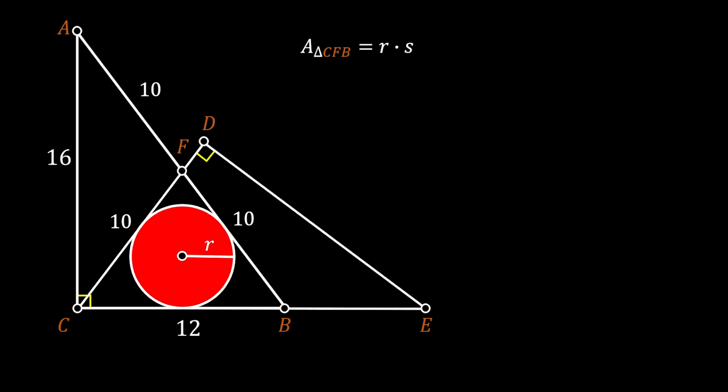Now, we can use this formula to find the radius of our circle to be equal to the area of our triangle over the semi-perimeter.